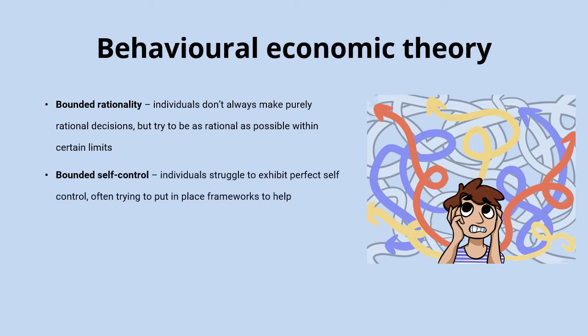We might also talk about bounded self-control, where individuals might struggle to exhibit absolutely perfect self-control as assumed with homo economicus, but they put frameworks in place to help them achieve a similar level of self-control. Homo economicus could sit with a huge slab of chocolate and eat only as much as they should, but in reality we don't always have that control, so we might put most of it away in the cupboard out of sight to help us exhibit that self-control.